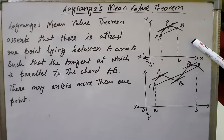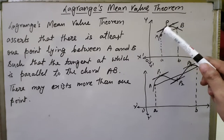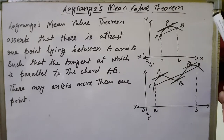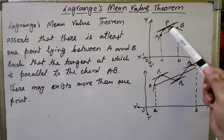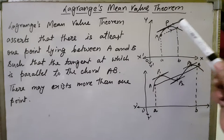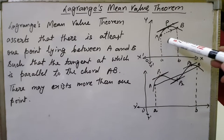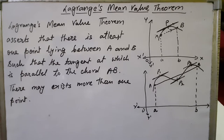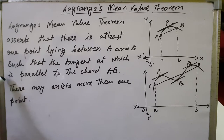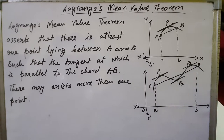Consider this curve with two points a and b. This curve is continuous — it does not break at any point. If we join the chord AB, you can see that this chord is parallel to a tangent on the curve. The Lagrange Mean Value Theorem says there must exist between a and b at least one point at which the tangent drawn is parallel to the chord AB. In this diagram, there are actually three points at which the tangent is parallel to the chord AB.